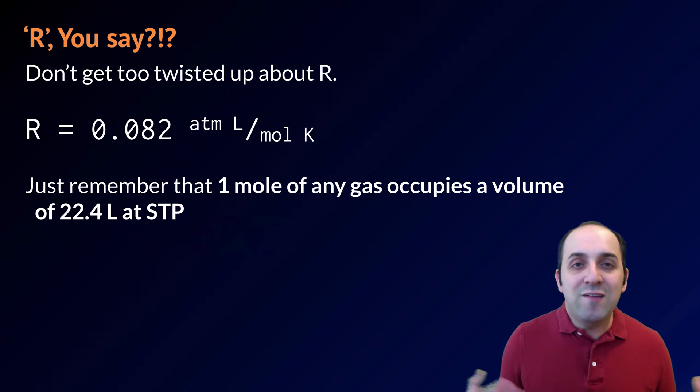R is a new thing. R is the universal gas constant. It's not something that you should get too crazy about. I give it to you on your honors reference tables as 0.082 atmosphere liters per mole Kelvin. But all you need to remember is that one mole of any gas occupies a volume of 22.4 liters at STP.